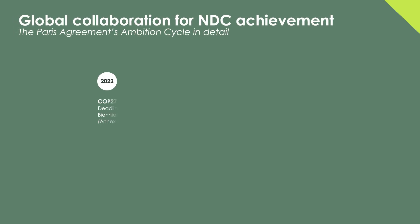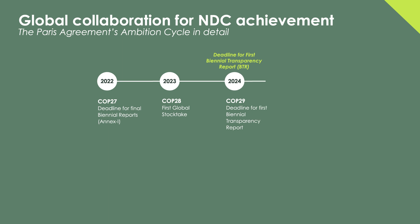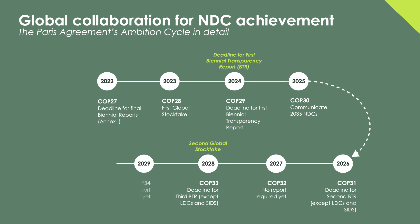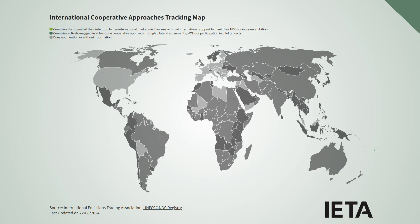To achieve its targets, the Paris Agreement establishes an ambition cycle — a ratcheting-up mechanism designed to progressively increase countries' ambitions based on periodic reviews and the latest climate science. The agreement promotes global collaboration by introducing Article 6, which establishes mechanisms for trading emissions reductions. This helps countries raise their NDC ambitions and enables private sector actors to compensate for unavoidable emissions with greater transparency and rigor.